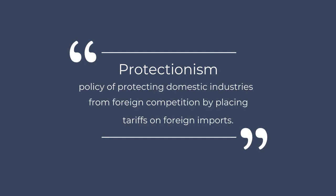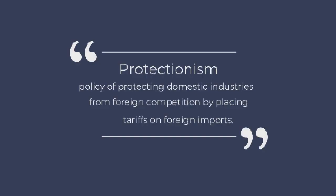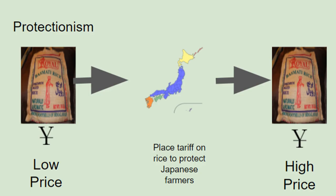The first thing that was going on was something called protectionism. Protectionism is a policy of protecting domestic industries from foreign competition by placing tariffs on foreign imports. A good example of this is with the price of rice in Japan.